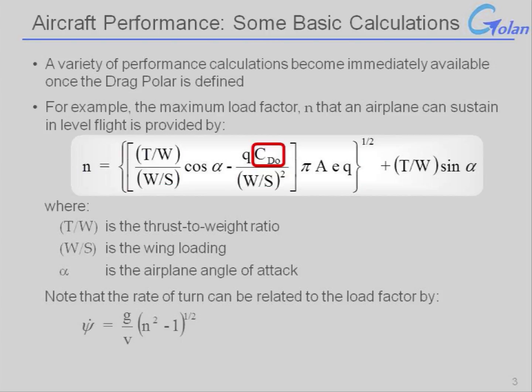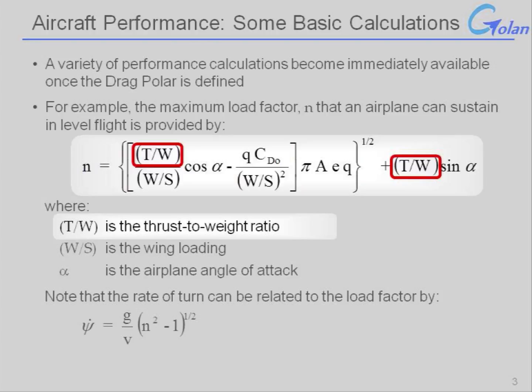The zero-lift drag coefficient is divided by the wing loading squared, so this is a relatively weak relationship. The relationship of maximum sustained load factor to thrust-to-weight ratio will be much stronger than the dependency on the zero-lift drag coefficient.